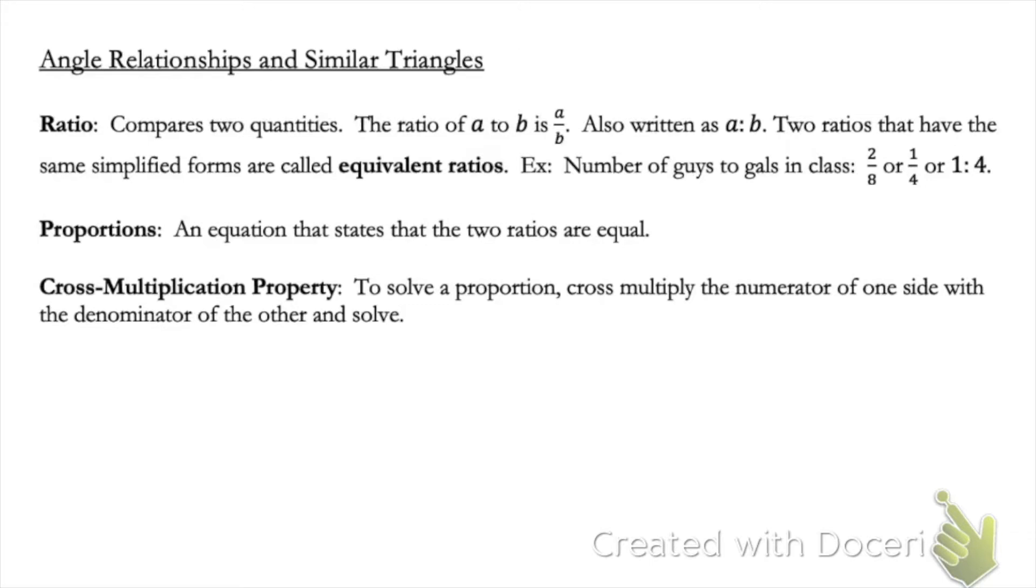Our first definition is ratio. This compares two quantities. The ratio of A to B is A over B, also written as A colon B. Two ratios that have the same simplified form are called equivalent ratios. So an example, if you have guys to gals in class, two guys to eight gals, that's the ratio. It would be the same as saying one guy to every four gals.